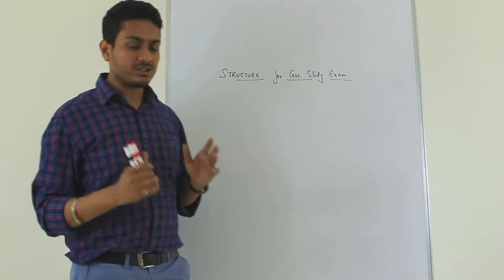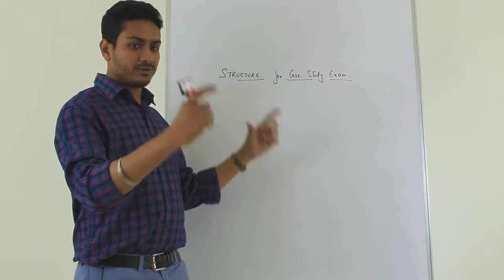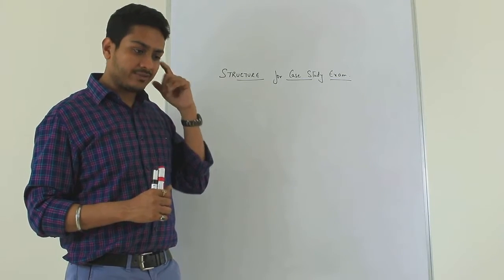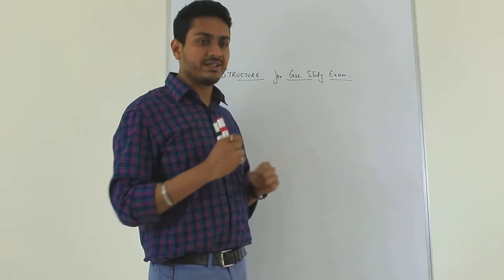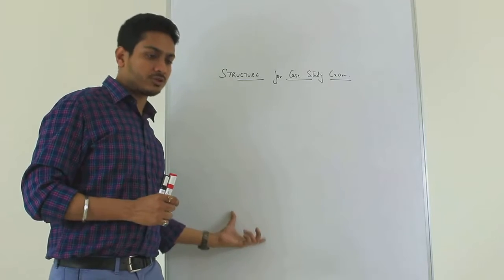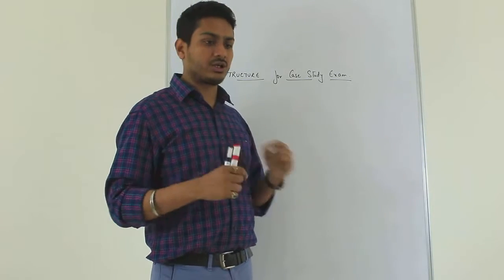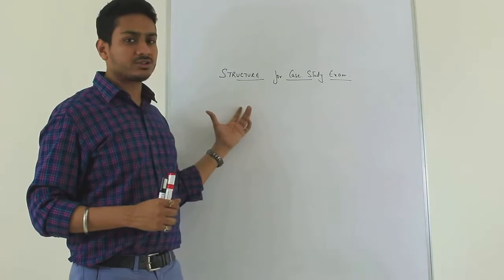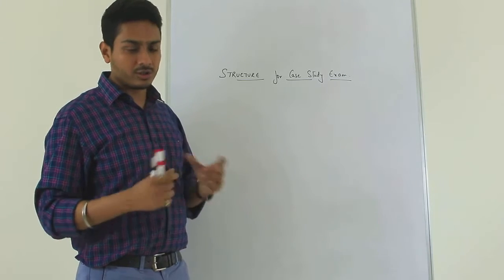One is you have a trigger in the question and then there could be two or three sub-questions. When you have two or three sub-questions, they generally tend to be direct, so at that point in time you do not have to follow the structure strictly in black and white — you can customize and use some shortcuts. But I am giving you a structure which is typical when you have a single question.